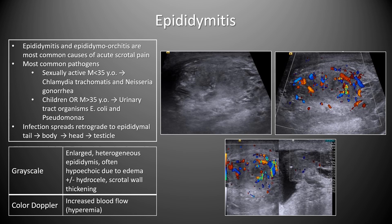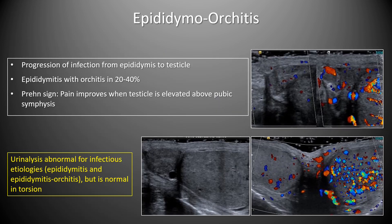The epididymis is typically enlarged and heterogeneous with reactive skin changes and marked hyperemia on color Doppler. Epididymo-orchitis involves both the epididymis and testis and occurs in about 20 to 40% of patients. The Prehn sign describes pain improving when the testis is elevated above the pubic symphysis but is considered unreliable. Urinalysis may be abnormal in infectious epididymitis but is normal in torsion.